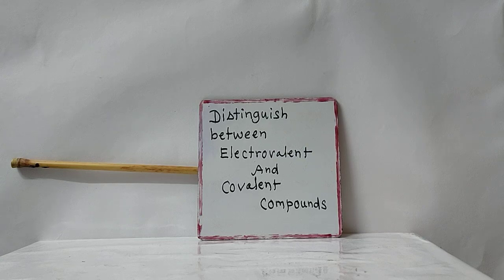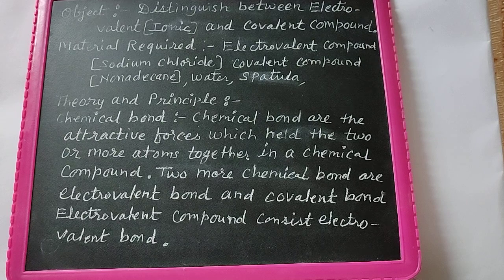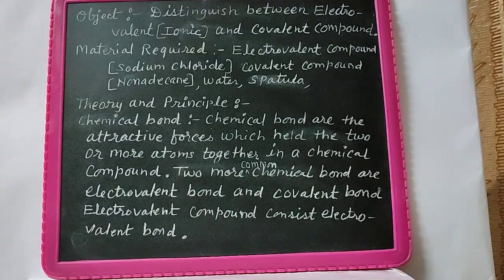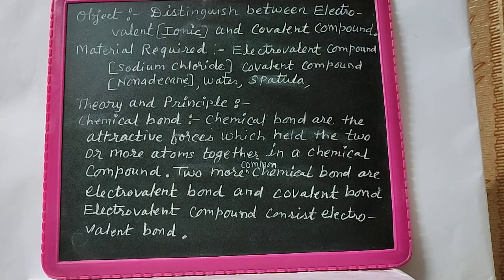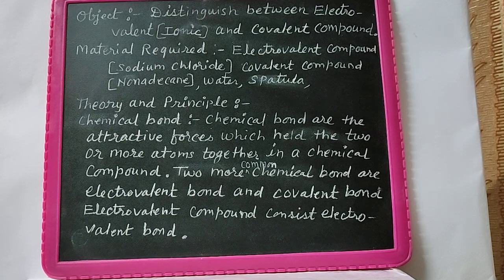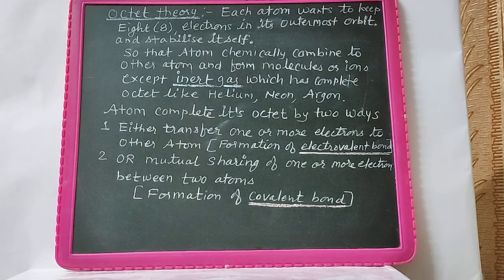Chemical bonds are the attractive forces which hold two atoms together in a chemical compound. Two common chemical bonds are the electrovalent bond and the covalent bond. Covalent compounds consist of covalent bonds, and electrovalent compounds consist of electrovalent bonds. According to octet theory, each atom wants to keep eight electrons in its outermost orbit.